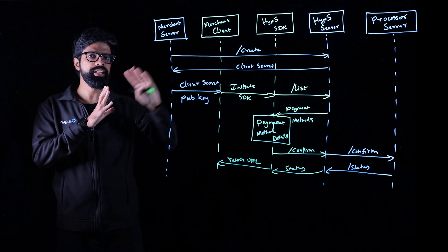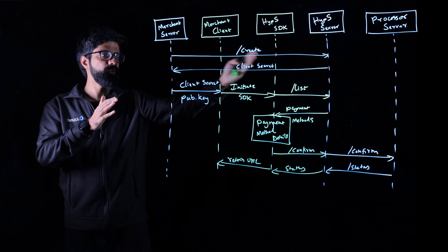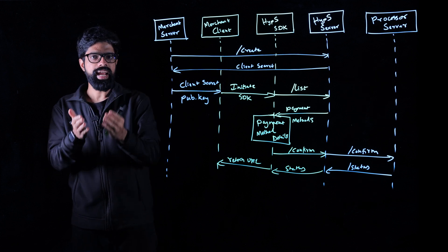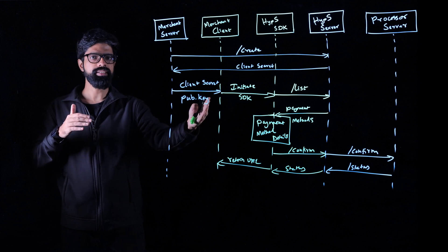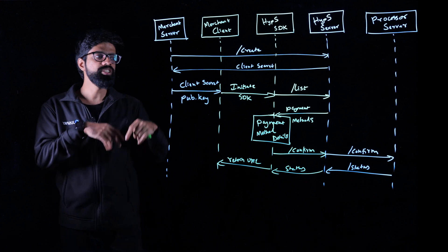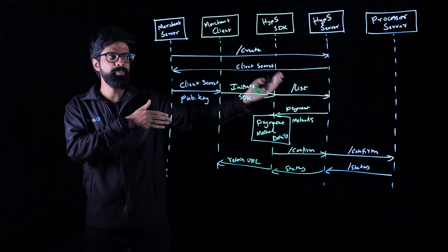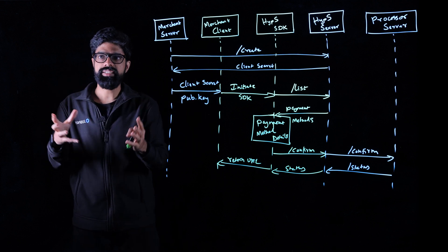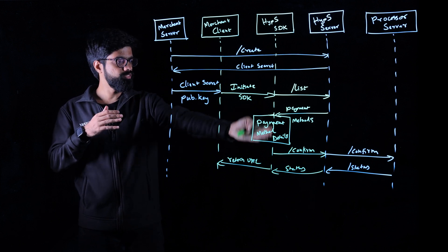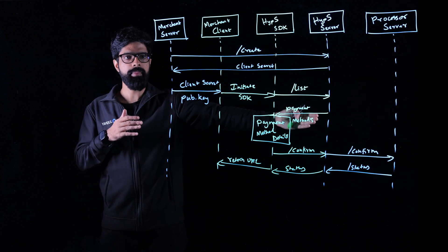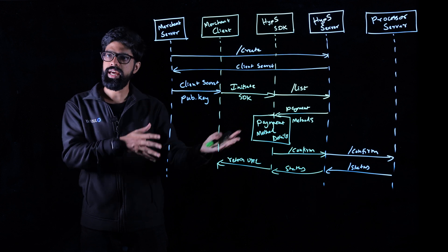That's a bird's eye view of how a single transaction goes through Hyperswitch. To summarize: your merchant server makes a payment create request to the Hyperswitch server, and in response you get a client secret, which uniquely identifies the transaction. You also have a publishable key, which uniquely identifies your account with Hyperswitch. Both of these details are sent to the client side application, which initiates the Hyperswitch SDK. The SDK fetches the applicable payment methods via the payment method list API, then opens an embedded checkout experience with the correct payment method details. The customer enters their payment method details and presses pay now, after which the confirm request is routed to the appropriate payment processor, who returns the status after settling the transaction. Based on the status, you redirect the customer to the appropriate return URL.